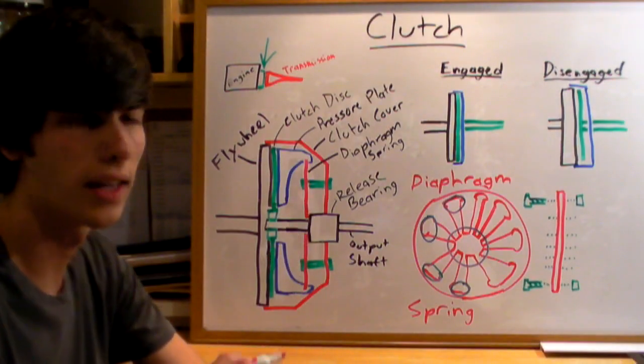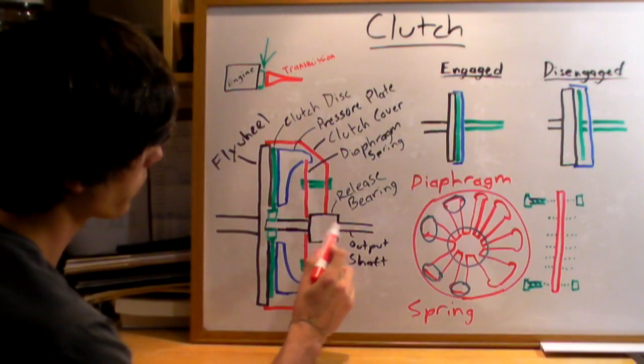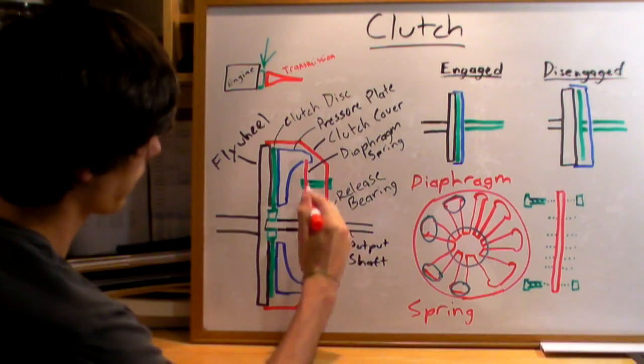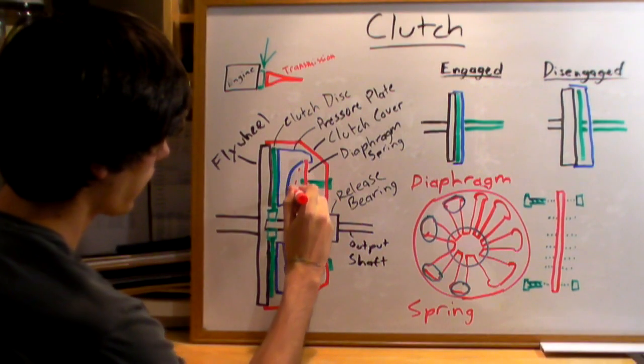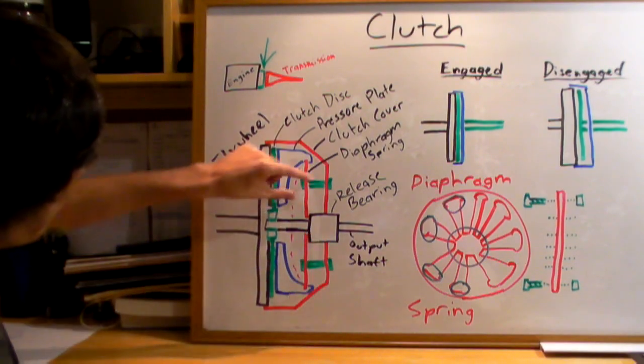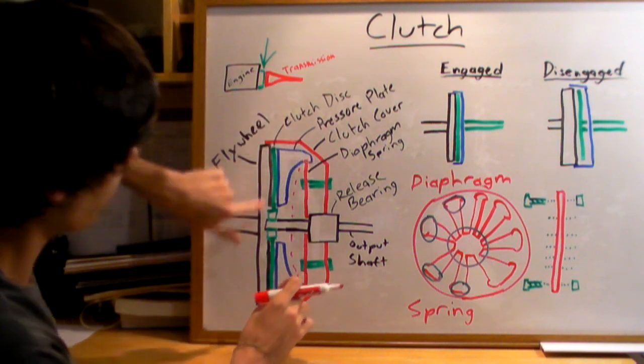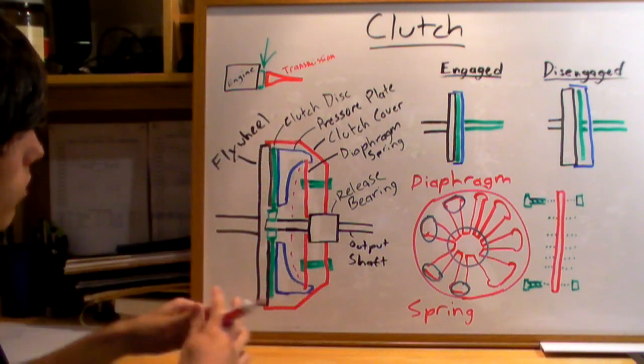So once again, just a little review of what's happening: you're going to be pushing this release bearing in, and it's going to cause this diaphragm to kind of bow in like that. And as it bows in, it's going to pull this pressure plate up off of the clutch disc so that they can rotate freely.